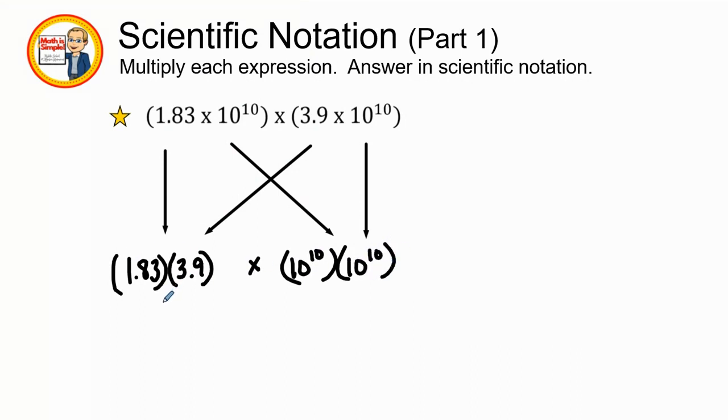So 1.83 times 3.9 is 7.137 times, then we are going to with the product rule, we're going to add our exponents, 10 to the 20th power. Pretty easy, huh? So when we're multiplying each expression, remember this little bow tie method. It's been something that has helped my students tremendously over the years. And so let's work on a third problem.